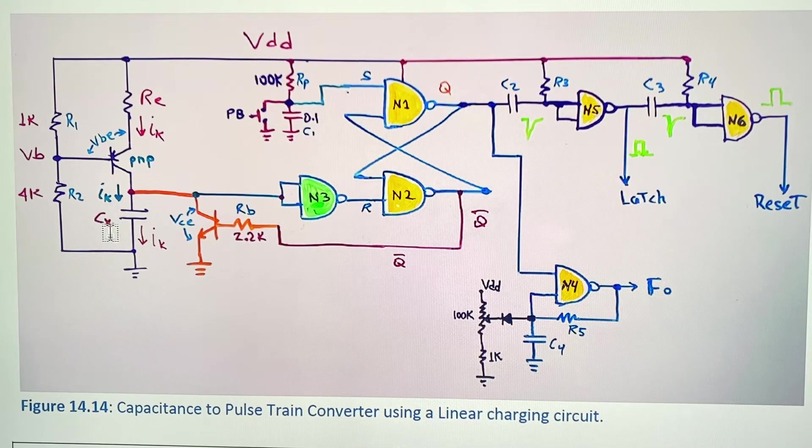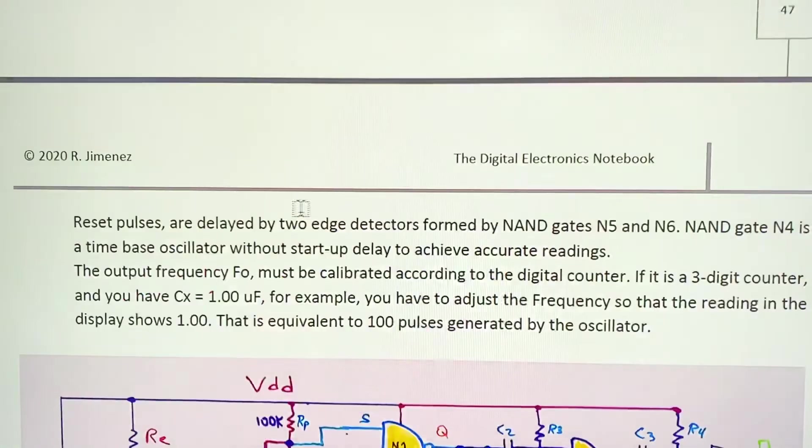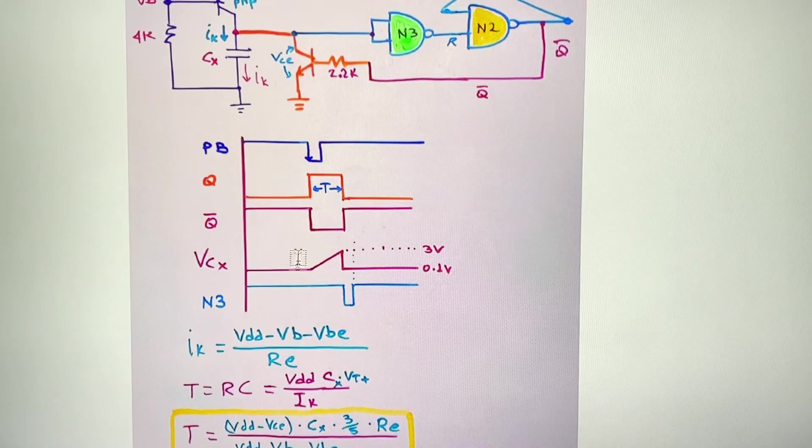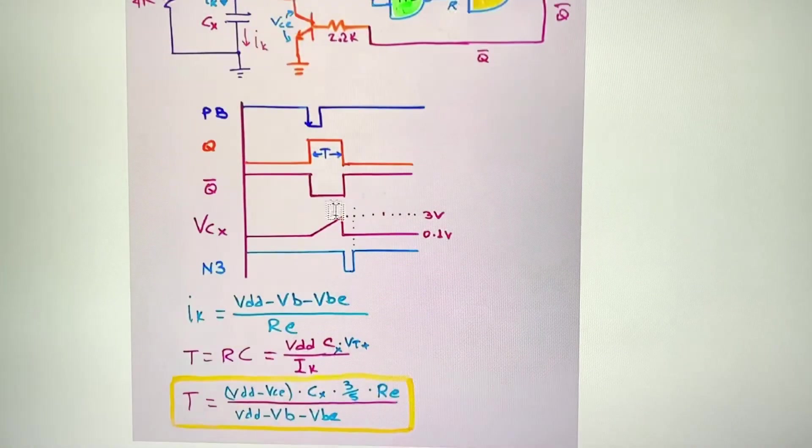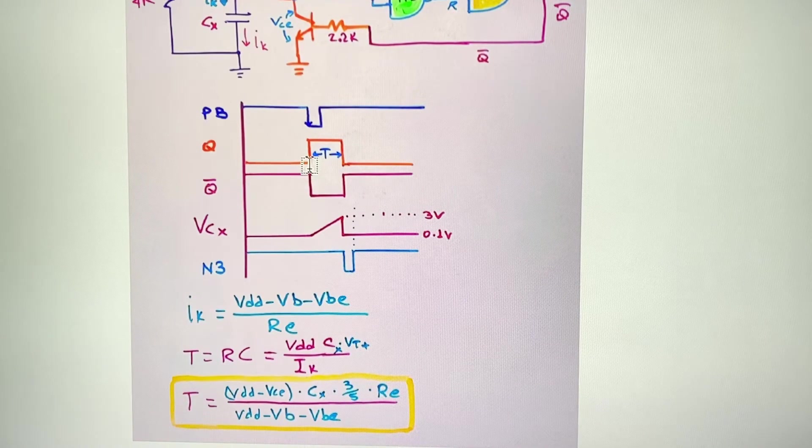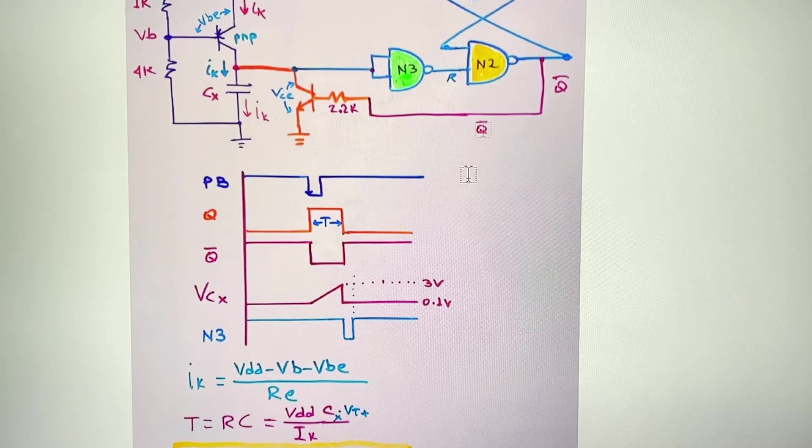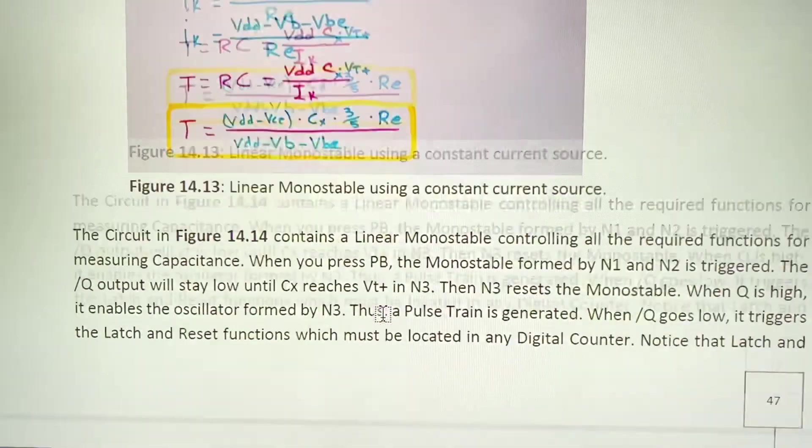In the previous lesson we saw that we will get from this circuit this pulse period on the Q output and in the same period with negative logic on the NOT Q output.